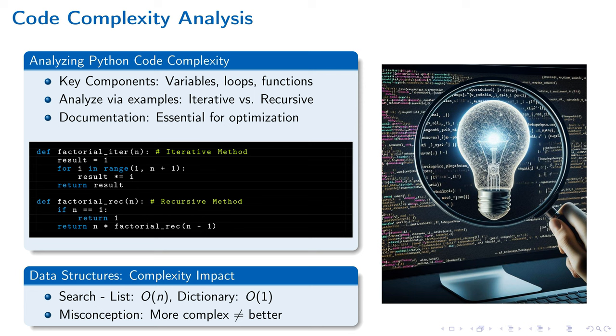Conversely, dictionaries enable O(1) search times, showcasing hash table efficiency. This distinction emphasizes not just code efficiency, but the critical role of structure and method selection.